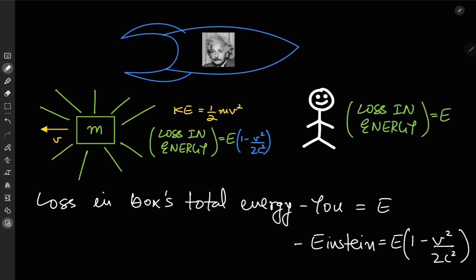But this discrepancy does not make any sense because the box here is a closed system, meaning that there are no external forces acting on it. So there shouldn't be any discrepancy in measuring changes in total energy.